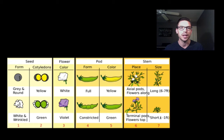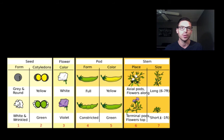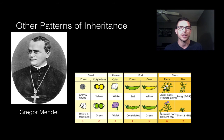Complete dominance means that if you receive two different alleles for a particular trait — for example when breeding a tall plant with a short plant — one of those traits would dominate the other. In the case of height, tall dominates short, so if you got one of each, you would still be tall. In modern genetics we understand it's not always that easy. Mendel did a great job as a pioneer, but there are other patterns that exist.